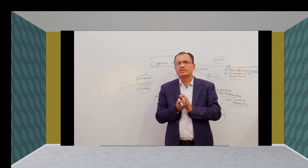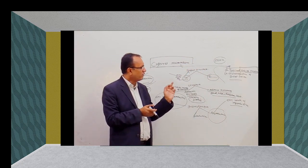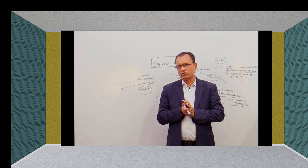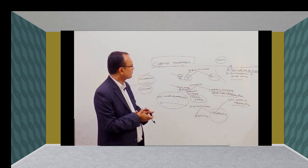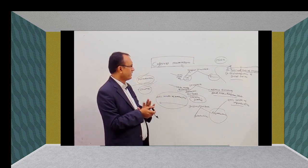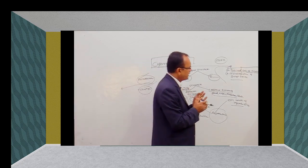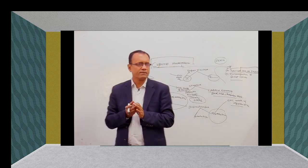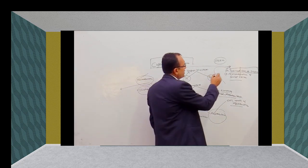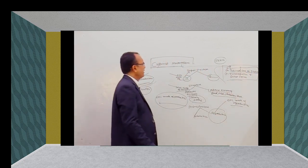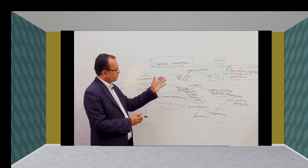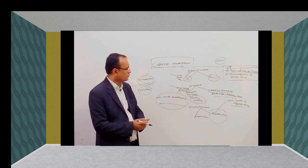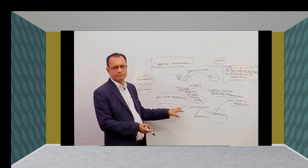Marvin Harris said that the disintegration of the Soviet Union was the product of a new kind of development of techno-environmental and techno-economic relationships, and therefore we can understand it according to cultural materialism. You can mention these case studies in the structure of your answer, but you should not discuss them in too much detail — only mention that Marvin Harris gave support to his strategy on the basis of the study of the sacred cow of India and the disintegration of the Soviet Union.